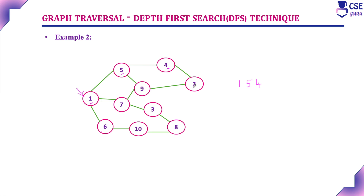The adjacent unvisited vertex to 4 is 2, so now visit 2. Next, consider the currently visited vertex 2; its adjacent unvisited vertex is 9. Mark 9 as visited.